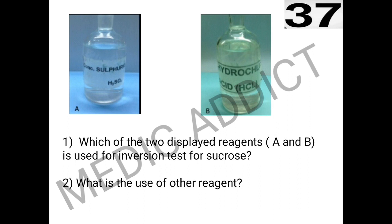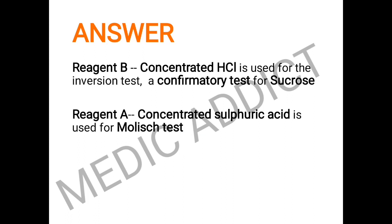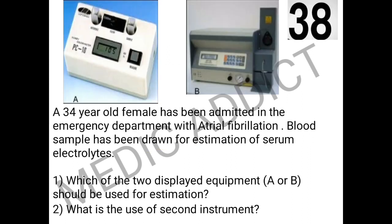Looking at the next spot: we can see two vessels, A and B, each containing a reagent with the name visible on the bottle. We must identify which of the two reagents is used for the inversion test for sucrose and what the other reagent is used for. Reagent B is concentrated hydrochloric acid (HCl), used for the inversion test, which is a confirmatory test for sucrose. Reagent A is concentrated sulfuric acid, used in the Molisch test.